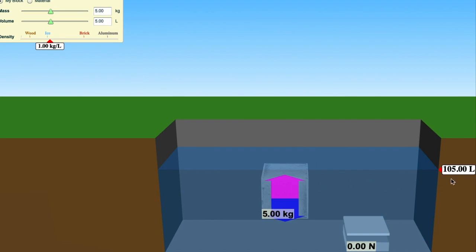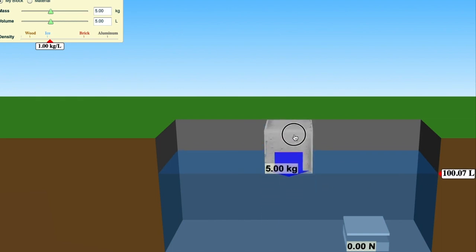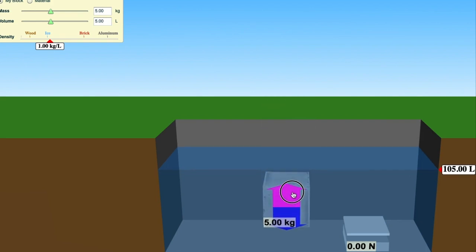Well, of course, Archimedes principle says that the amount of volume that this block was, five liters, is going to be the amount that is going to be the displacement. So this 105 liters tells us that I've now had an increase of five liters. I had a hundred liters beforehand.